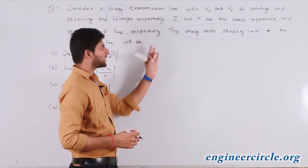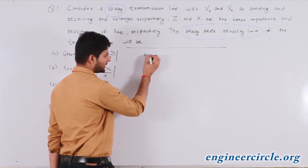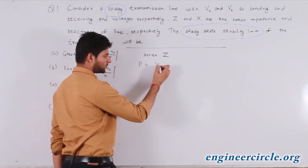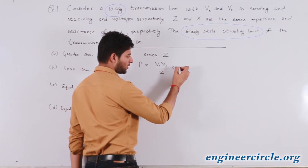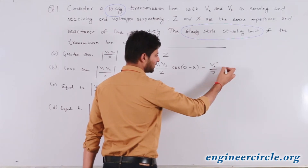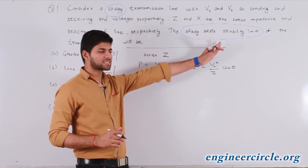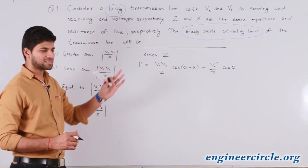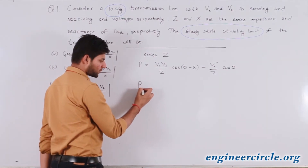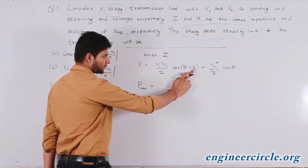As two different types of impedances and reactance are given, we will consider each case separately. When we are considering only series impedance Z, the value of power flow will be equal to V1V2/Z · cos(θ − δ) − V2²/Z · cos θ. For calculating the steady state stability limit, which is the maximum power flow possible in a transmission line, maximum power flow P_max will occur when θ becomes equal to δ.